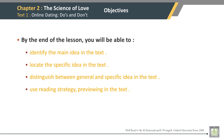Text 1: Online Dating — Online Dating Do's and Don'ts. Objectives: By the end of the lesson, you will be able to identify the main idea in the text, locate the specific idea in the text, distinguish between general and specific ideas in the text, and use the reading strategy of previewing in the text.